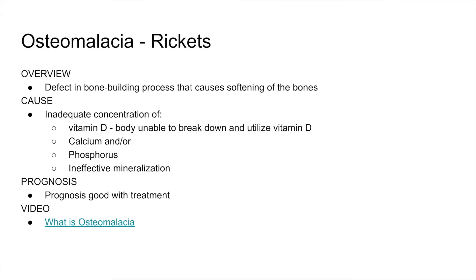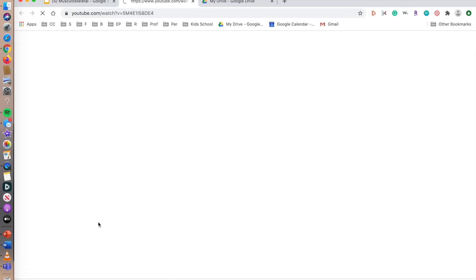Let's talk about osteomalacia. Osteomalacia is a defect in the bone-building process that causes softening of the bones. Causes include inadequate concentration of vitamin D — either the body can't break it down or adequately utilize it — inadequate calcium or phosphorus concentration, or ineffective mineralization and coordination of vitamin D, calcium, and phosphorus. The prognosis is usually good with treatment.